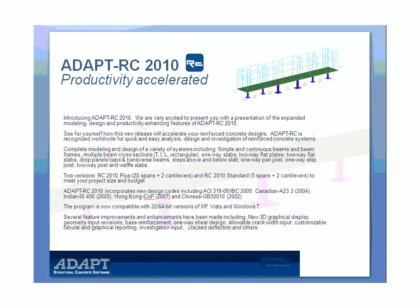Two versions are offered to meet your project size and budget: RC 2010 Plus and RC 2010 Standard. Multiple design codes have been included in AdaptRC 2010, including new codes such as ACI 318-08, Canadian 2004, Indian 2005, Hong Kong 2007, and the Chinese 2002 codes. The program is now compatible with 32 and 64-bit operating systems including Windows XP, Vista, and Windows 7.